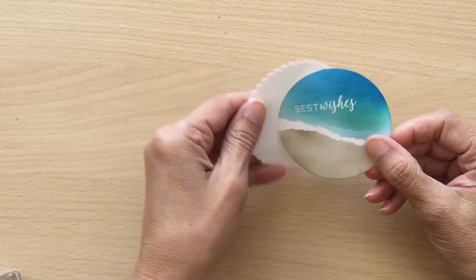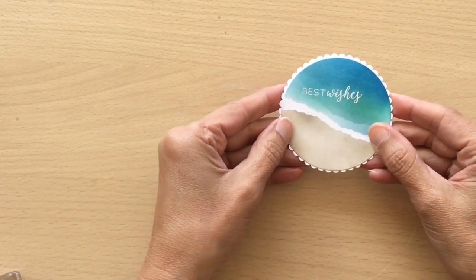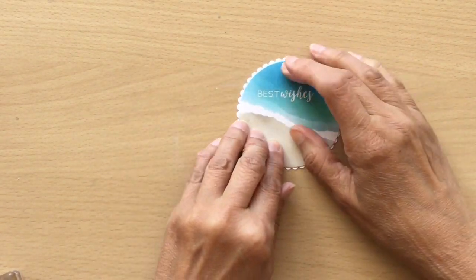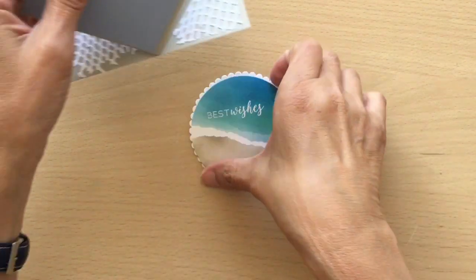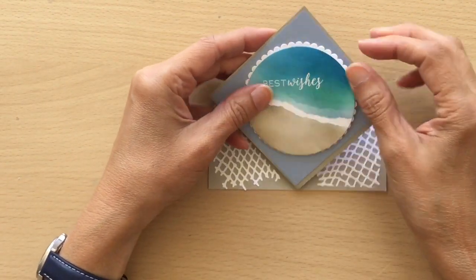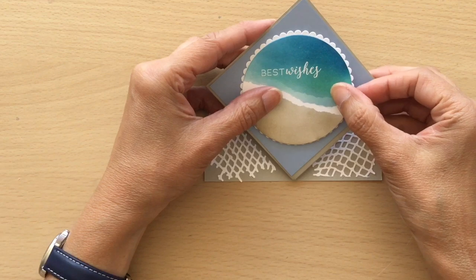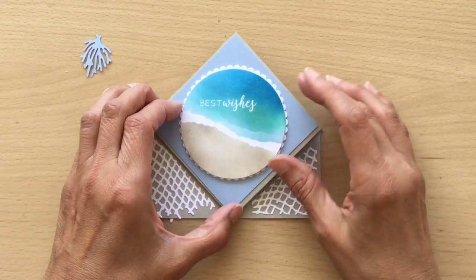So I'm going to stick this onto a little scalloped layering circle and I'm going to use dimensionals and this is going to stick onto the front here. So I'm going to do that now and I'm going to do some more decoration.